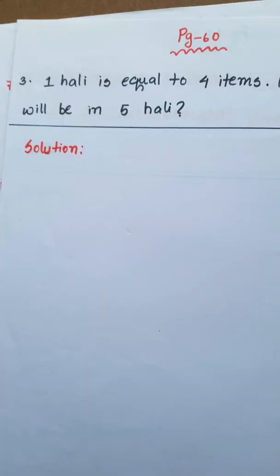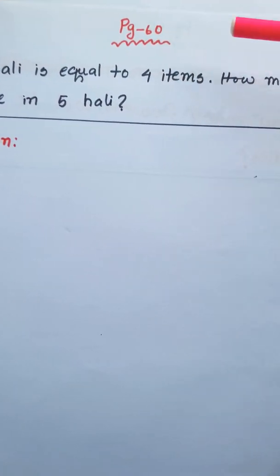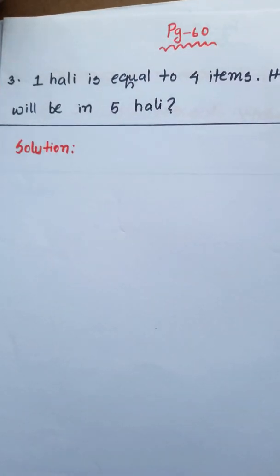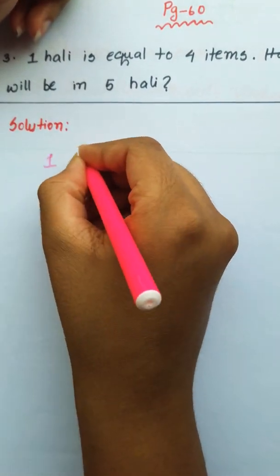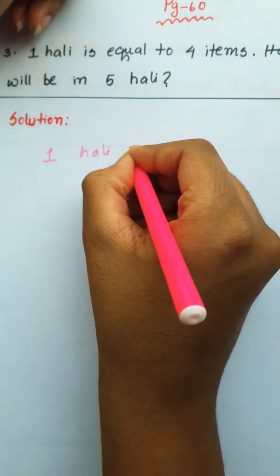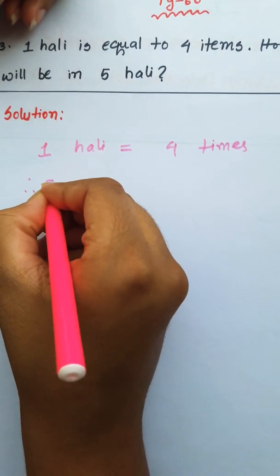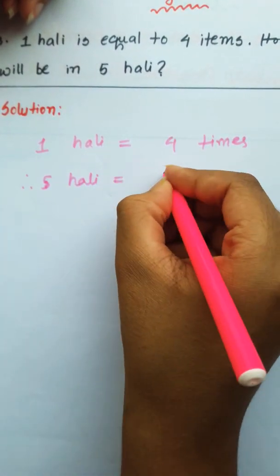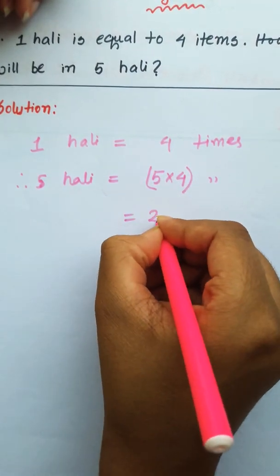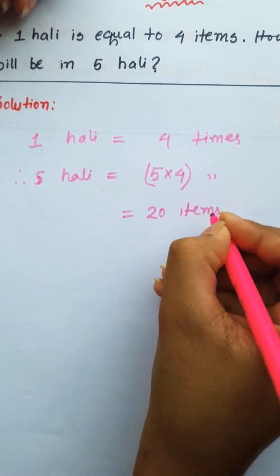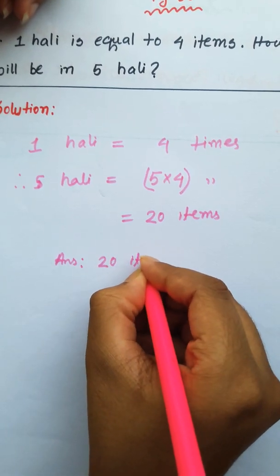The question is: 1 hali is equal to 4 items. How many items will be in 5 hali? 1 hali is equal to 4 items. Therefore, 5 hali is equal to 5 into 4 items, that is 20 items. So the answer is 20 items.